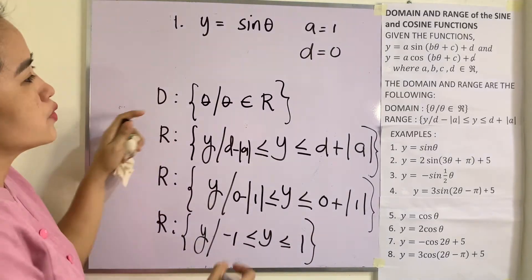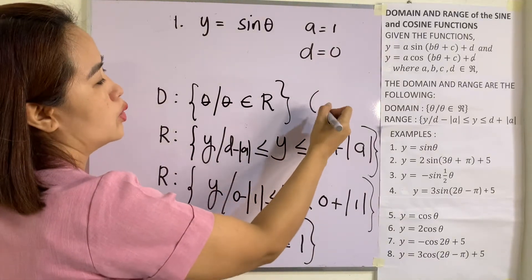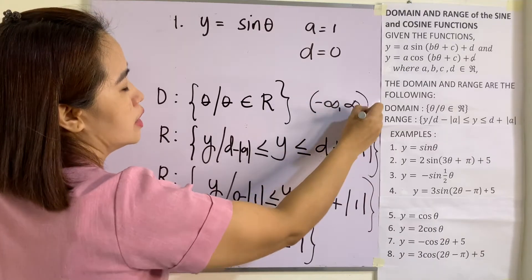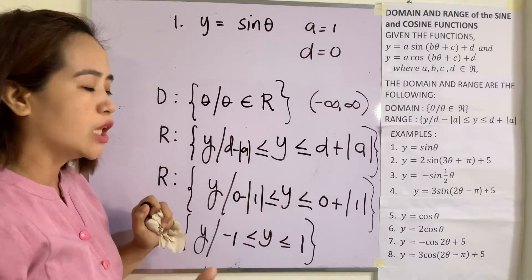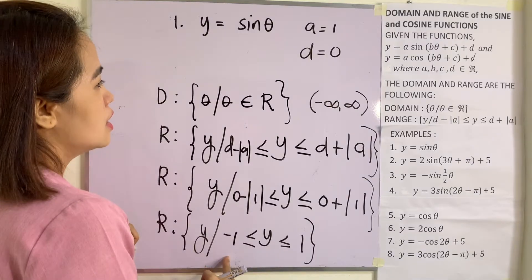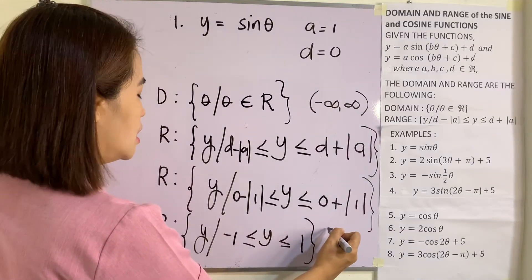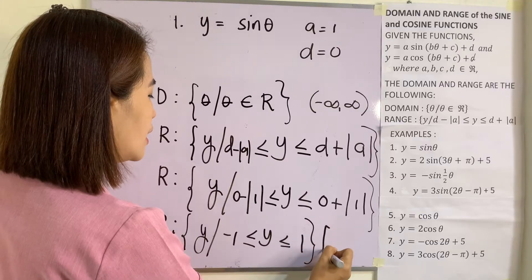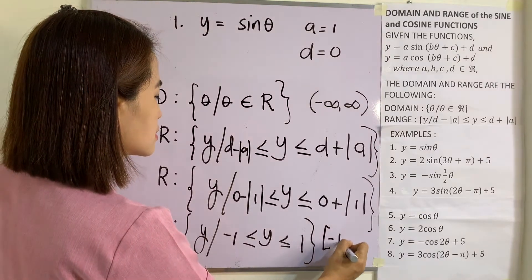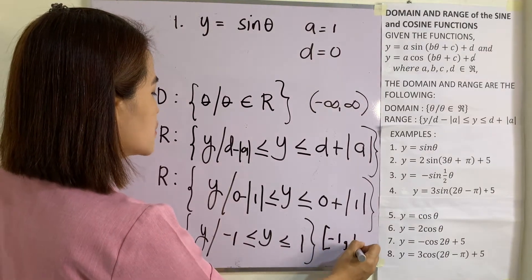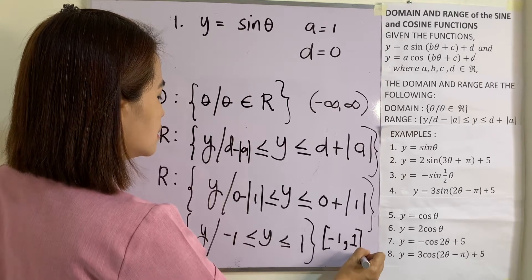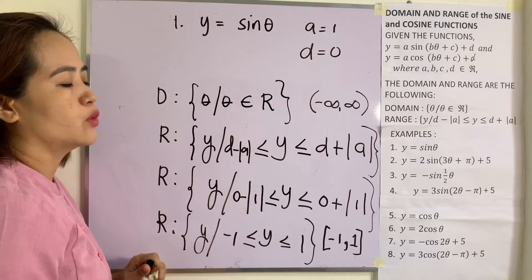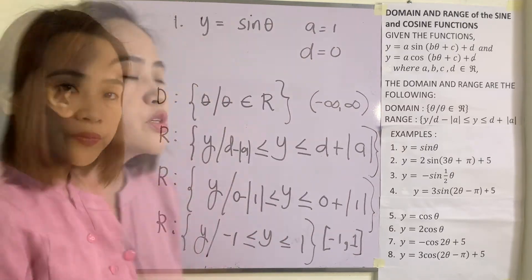Writing this in interval notation: the domain is (−∞, +∞), covering all real numbers. The range is [−1, 1], since y is less than or equal to 1 but greater than or equal to −1.